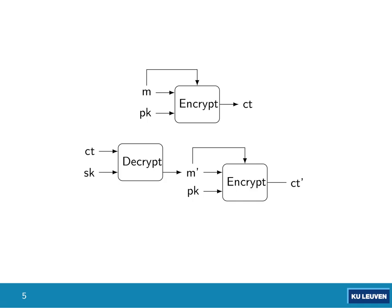This is called the Fujisaki-Okamoto transformation — a transformation to protect against chosen ciphertext attacks. So an attacker who inputs a chosen invalid ciphertext gets it decrypted, but Alice re-encrypts and ends up with a different ciphertext. She notices and gives away no information. So an attacker will not be able to learn anything.